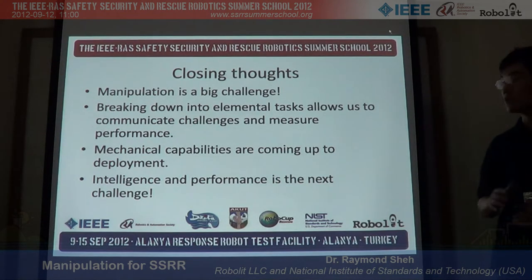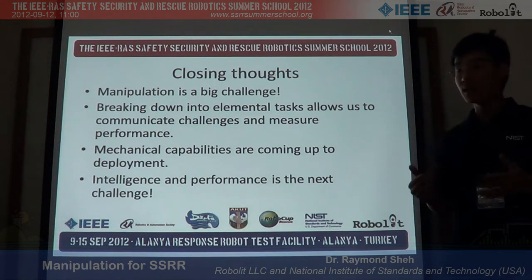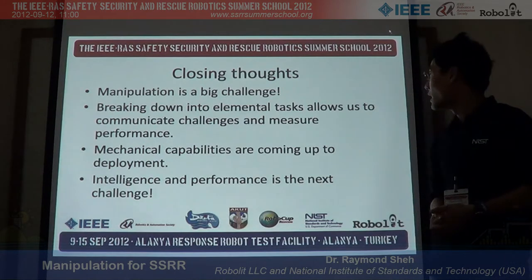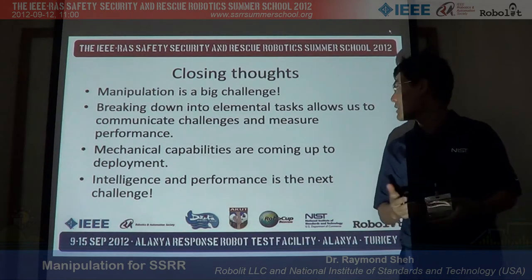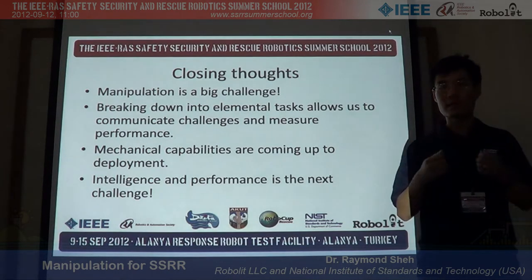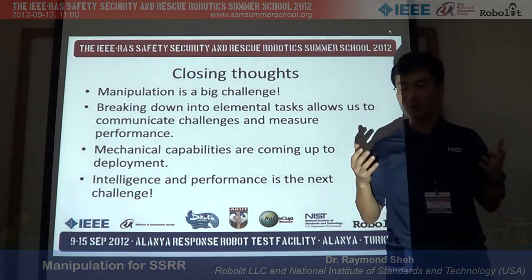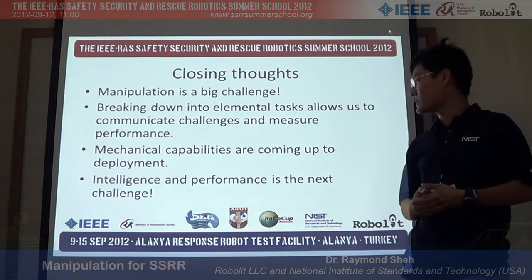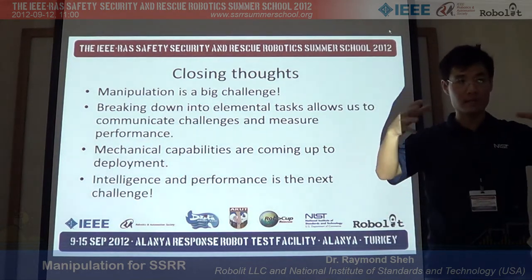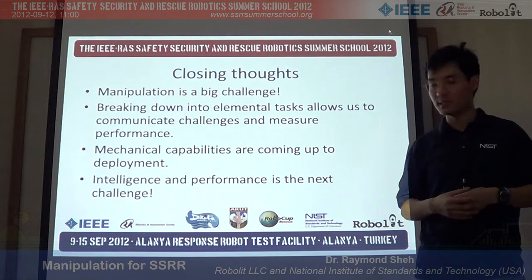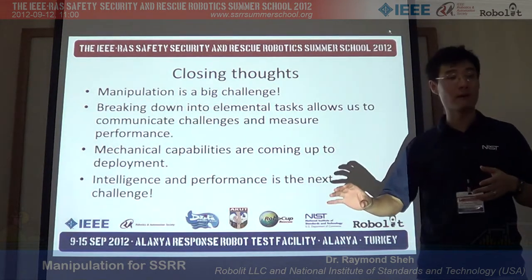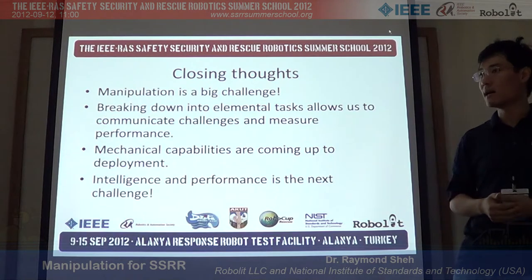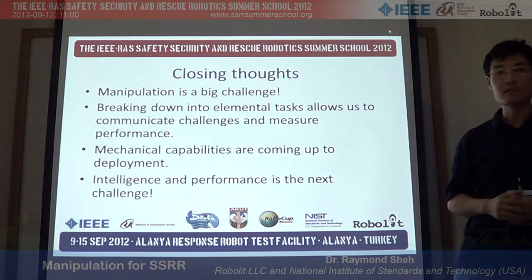To close: manipulation is a big challenge and has been very poorly addressed compared to things like rough terrain mobility. Breaking down elemental tasks allows us to communicate these challenges, compare performance, and ensure we're working on the right problems. Mechanical capabilities are coming up to deployment and we're starting to see hyper-redundant systems emerge. Intelligence, performance, and user interfaces are the next challenge. And of course there's the challenge of actually getting these things to market to the people who need them.